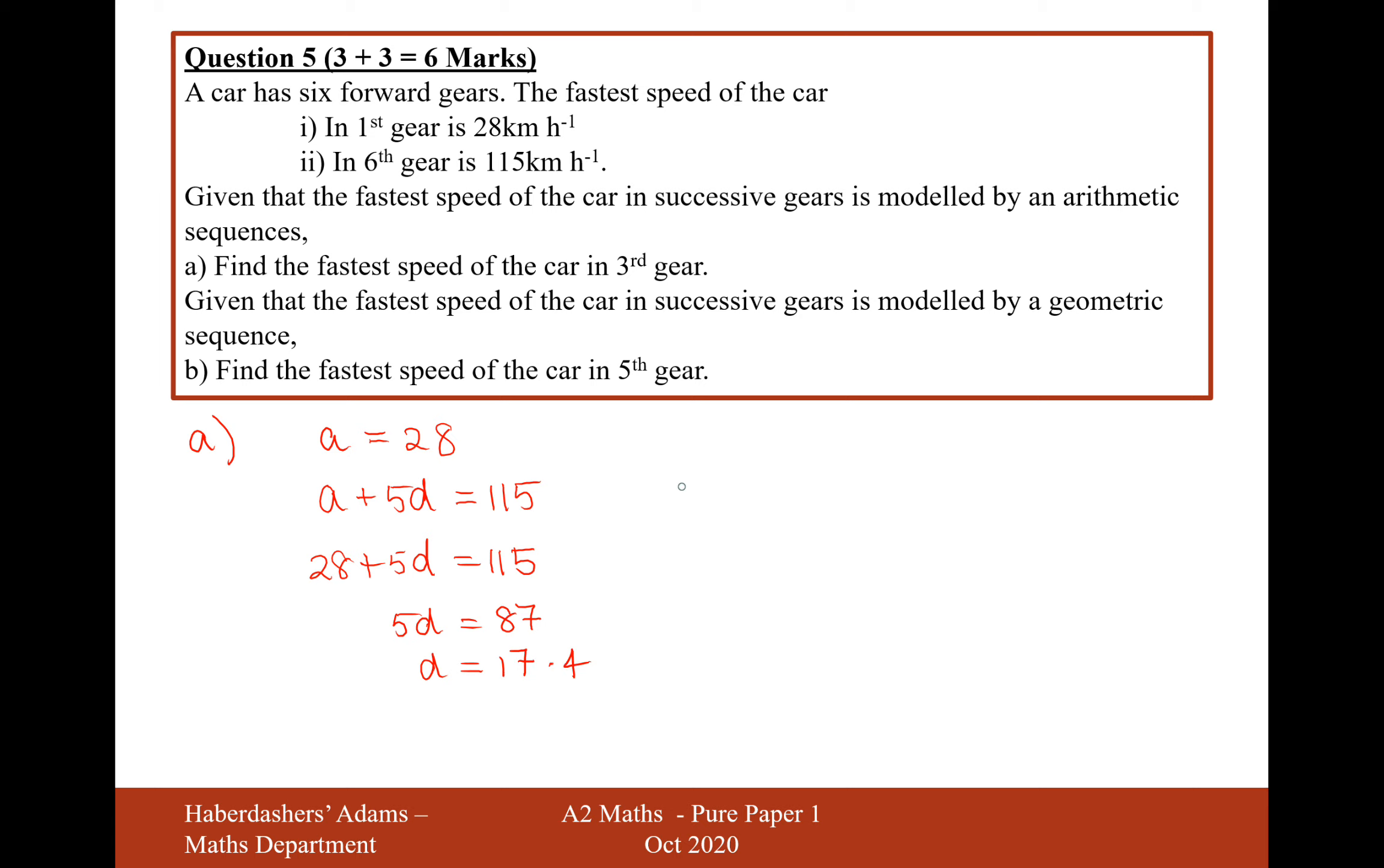So in each gear, when you go up a gear, your maximum speed is going to increase by 17.4. So if we want to work out the third gear, we're going to have to do A plus 2D, so therefore that's going to equal 28 plus 2 lots of 17.4, which equals 28 plus 2 times answer is 62.8, 62.8 km per hour.